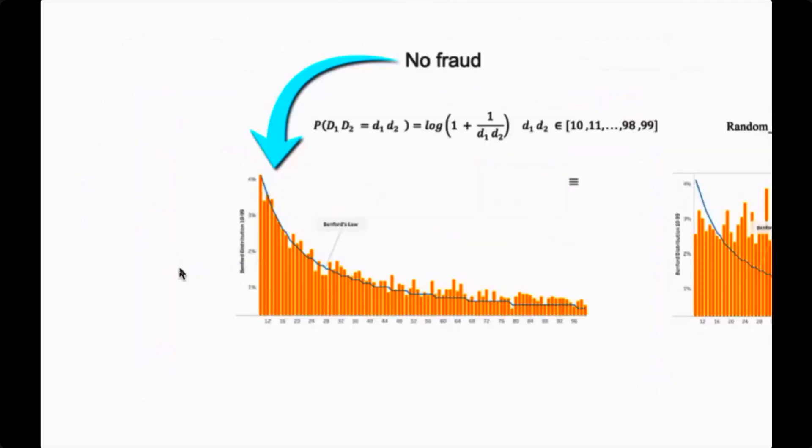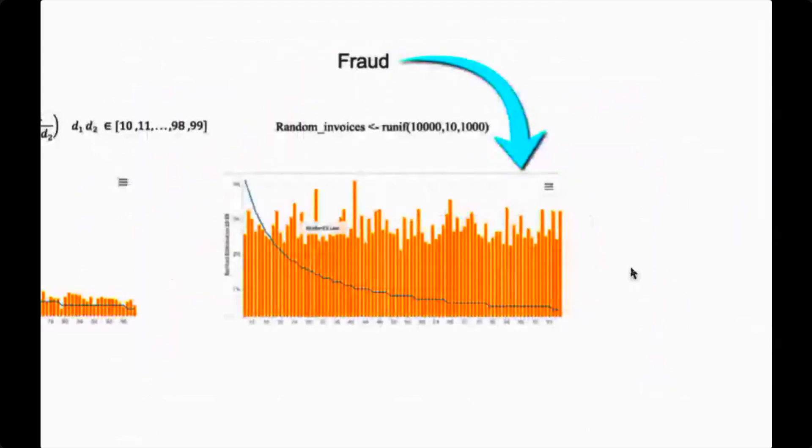We don't know how fraudsters create fake invoices, but that's kind of okay. The purpose of a synthetic dataset is not to understand how fraudsters really work, but rather to compare the accuracy of different algorithms. So here on the left, we see invoices based on Benford's law. And here on the right, we created fraudulent invoices by randomizing invoice amounts.